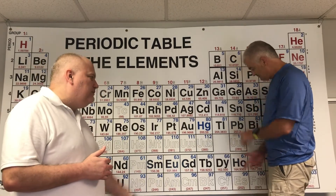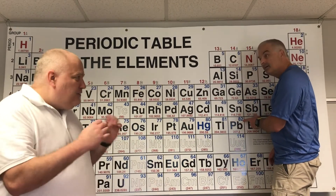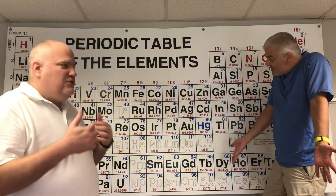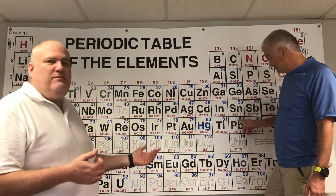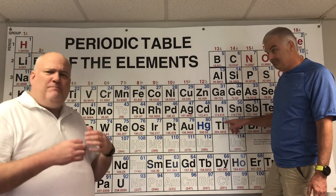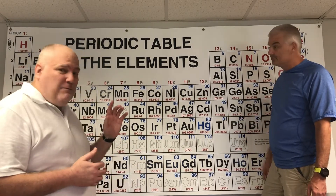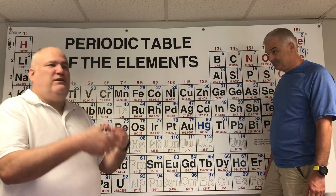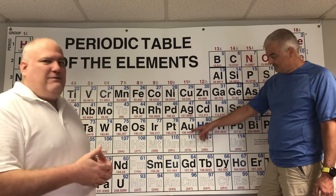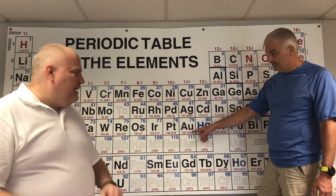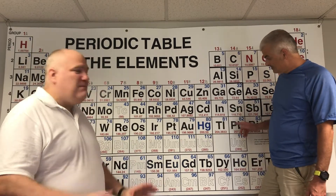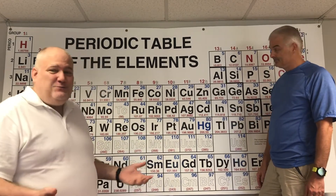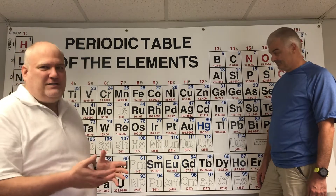The number on top — the atomic number — is the most important thing because it defines the atom. Every single lead atom has 82 protons; if you don't have 82, you're not lead. Back in the day, alchemists said they could transmute useless metals into gold. I used to laugh at that, but if you start with 82 protons and take three away, you'd have gold — and the reality is we can do that now, though it's incredibly costly.